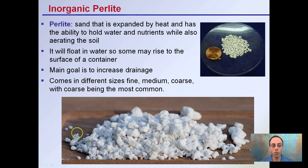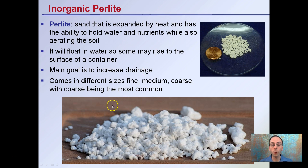Starting with perlite — it looks like this. It's little white particles. This gives you a size orientation compared to a penny. Perlite is sand that's been expanded by heat and has the ability to hold water and nutrients while also aerating the soil. It will float in water, so it may rise to the surface of the container, especially when you first go to irrigate. These white particles might float to the surface — that's the perlite. The main goal is to increase the drainage of the growing media.